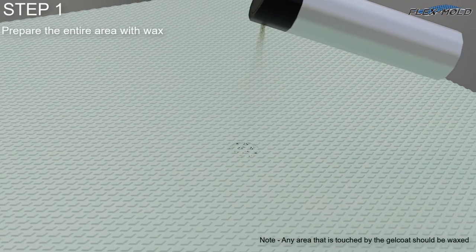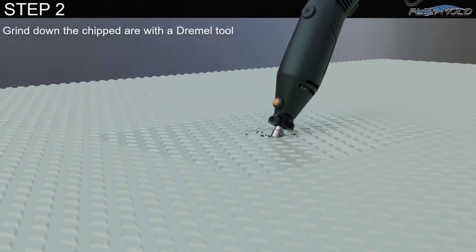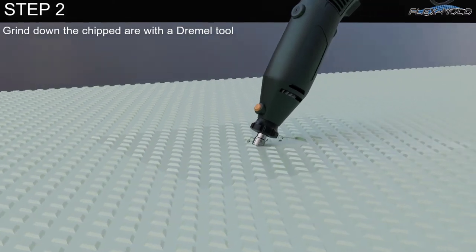First, prepare the damaged area and surrounding area with wax. Make substructure repair if needed and grind down to the bottom of the pattern.